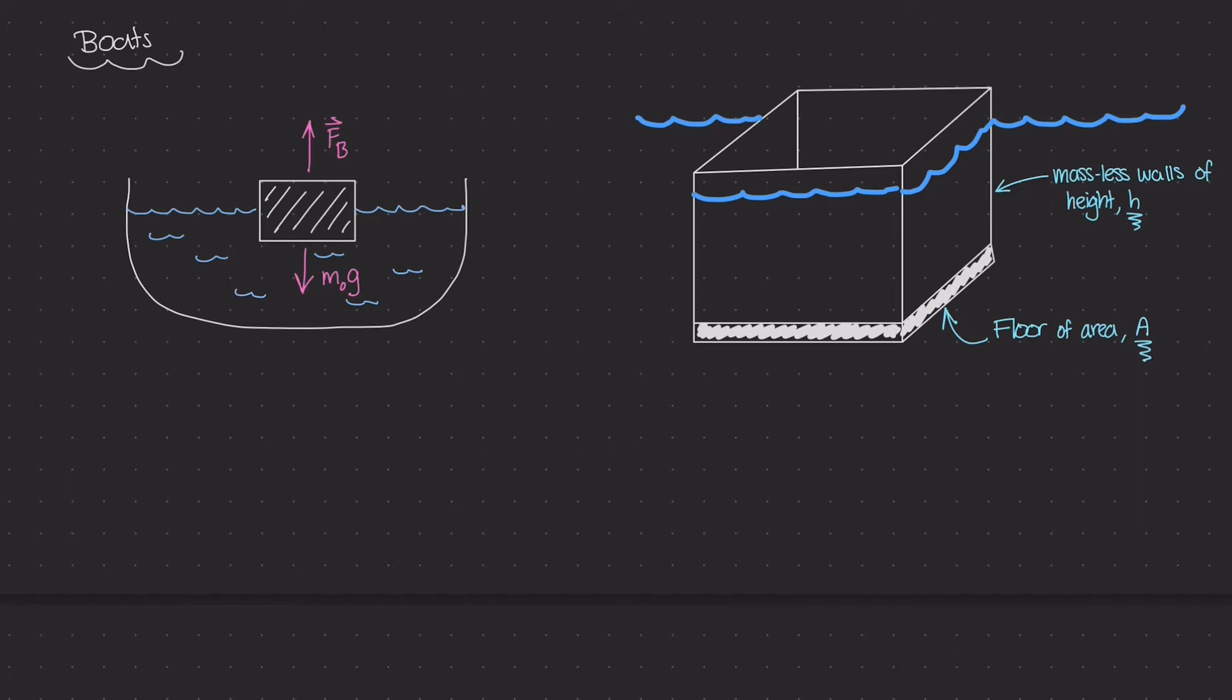But I want to talk about the case of boats. Boats float in water and they are massive objects that don't have uniform composition. They're made out of different types of materials and geometry, and they seem to just float on top of water effortlessly.